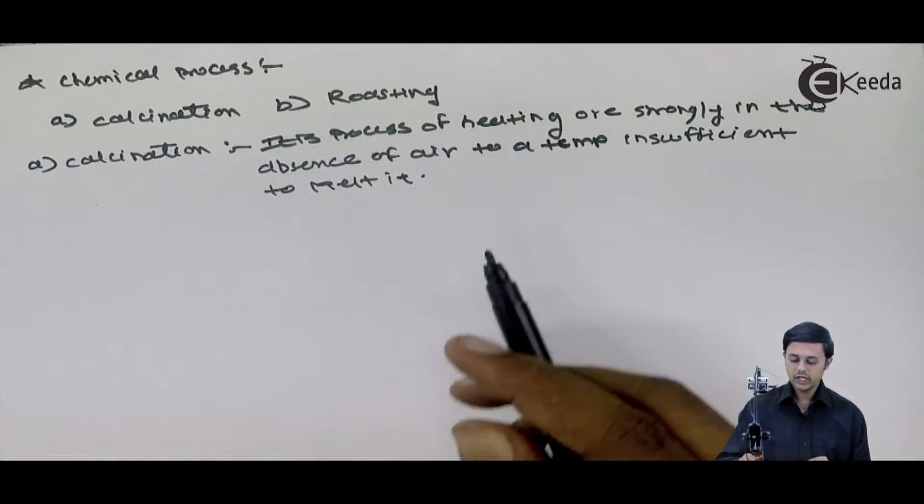How much temperature we want? The temperature should be lower than the melting point of that particular metal. So this process we call it calcination.